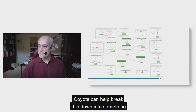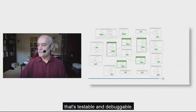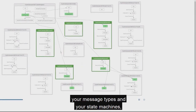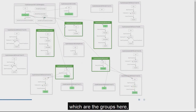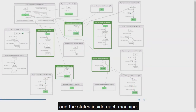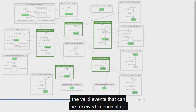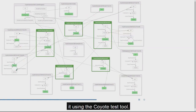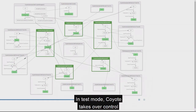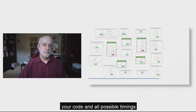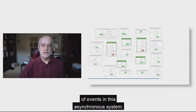Coyote can help break this down into something that's testable and debuggable. First, you use the Coyote framework to declare your message types and your state machines, which are the groups here, and the states inside each machine — we see four states here. You also declare what are the valid events that can be received in each state. Then you write a Coyote test and run it using the Coyote test tool. In test mode, Coyote takes over control of all concurrency and non-determinism in your code and all possible timings of events in this asynchronous system.